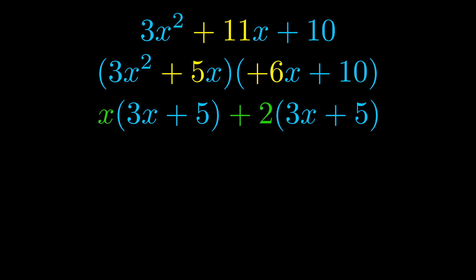Notice also how what remains inside of the parentheses is the same in both cases. The blue values are the same. Those blue values will become one of our factors and we will combine the two green values, the GCFs that we pulled out to get the other one. And that is our fully factored equation.